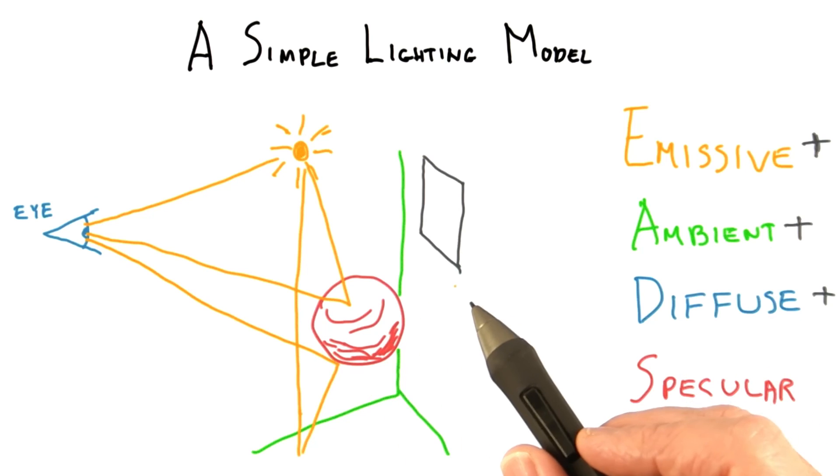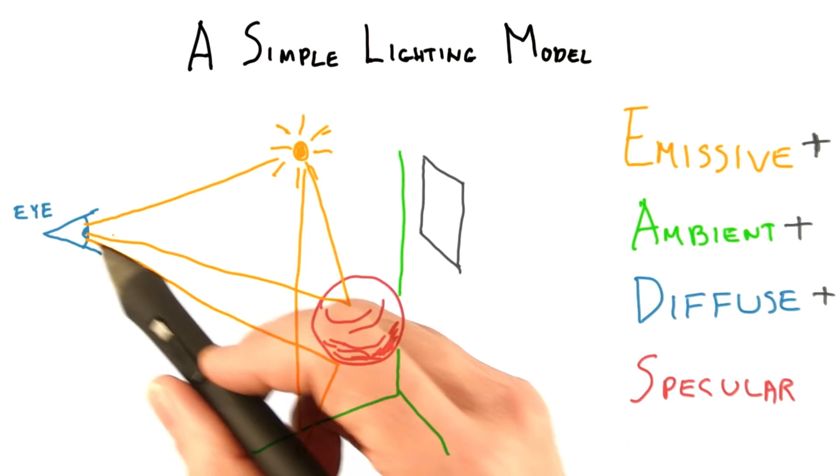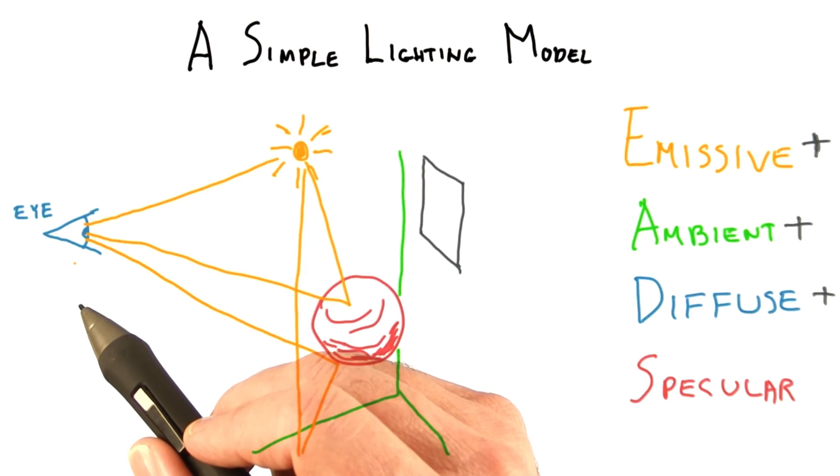In terms of computation, the specular term is also affected by the viewer's location, while the diffuse term is determined only by each light's location.